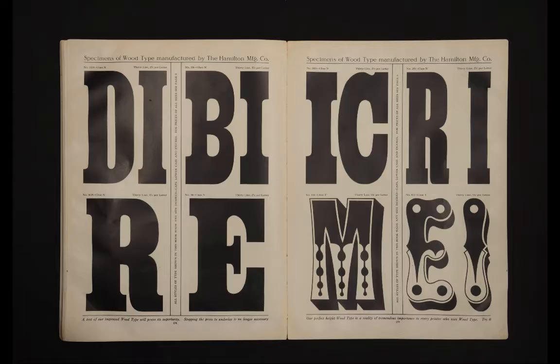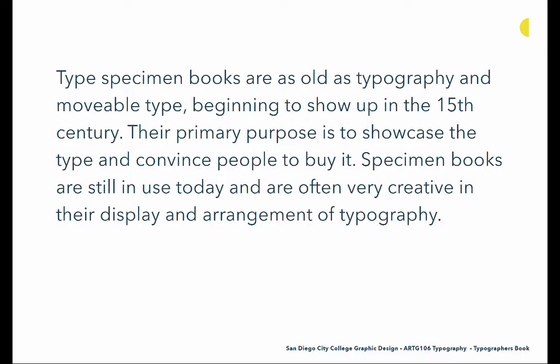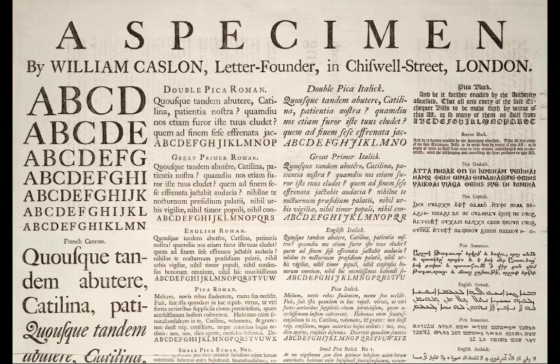And then we have some type specimens, because type specimen books are the best place to look for inspiration on this assignment. The assignment is to showcase the typography of your assigned typographer, and that is really what type specimens are meant to do. Type specimen books are as old as typography and movable type — they began to show up in the 15th century, and their primary purpose is to showcase type and convince people to buy it. Specimen books are still in use today and are often very creative in their display and arrangement of typography.